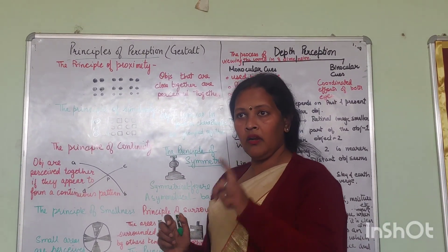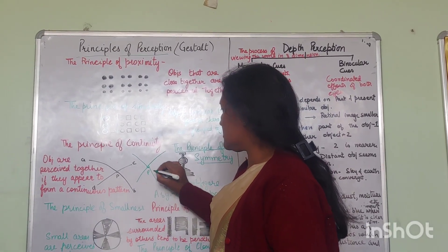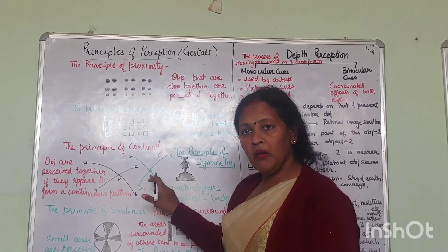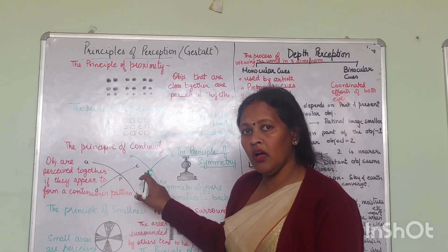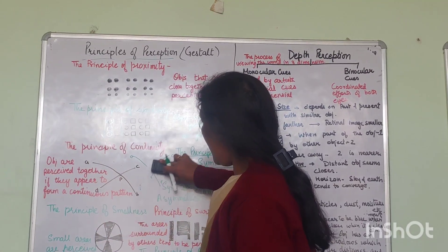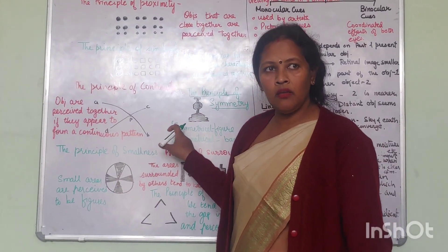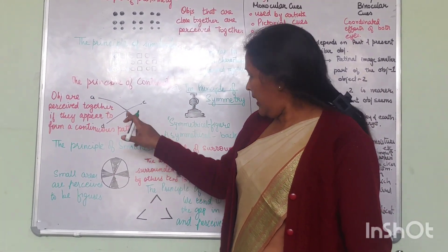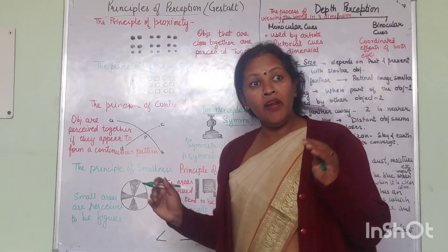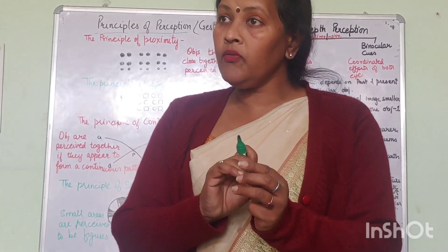Now, the principle of continuity. Let's take one point P, and I am making four separate lines — A, B, C, D — at point P. We tend to take objects together if they are in continuity.